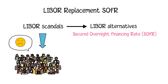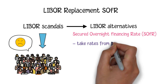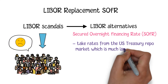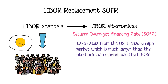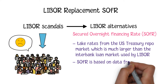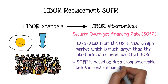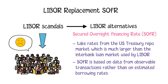SOFR is a benchmark rate mainly for US dollar-denominated financial products and loans. It takes rates from the US Treasury repo market, which is much larger than the interbank loan market used by LIBOR, making the final calculation more accurate. Moreover, unlike LIBOR, SOFR is based on data from observable transactions rather than estimated borrowing rates, making it a more accurate indicator of real borrowing costs.